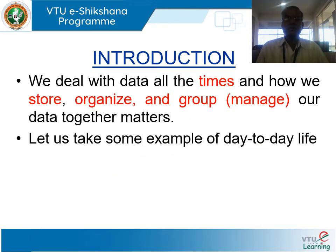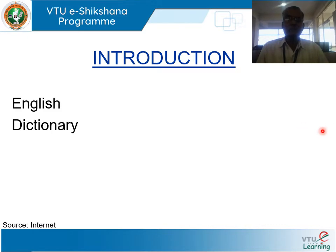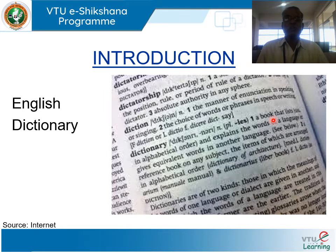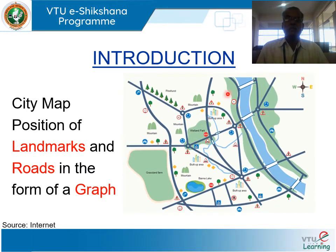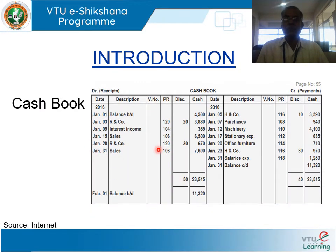Let us take some examples from day-to-day life. In an English dictionary, words are organized in alphabetical order, which makes search easy — the data structure used here is for searching. Another example: a city map represents landmarks and roads in the form of a graph. A cash book is another example where accounts are maintained row-wise as well as column-wise.